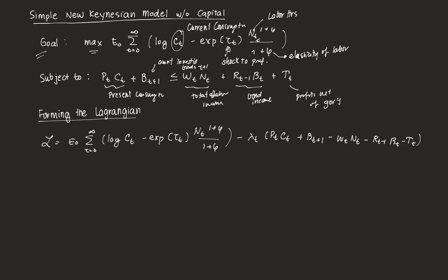We're going to largely ignore the profits term and stick to our analysis on consumption, bonds, and labor hours. We're going to form the Lagrangian function to do constrained optimization — maximizing the objective function subject to the budget constraint. We want to derive the first order conditions, and in this case we're going to use three: the derivative of the Lagrangian with respect to consumption, to labor hours, and to bonds.